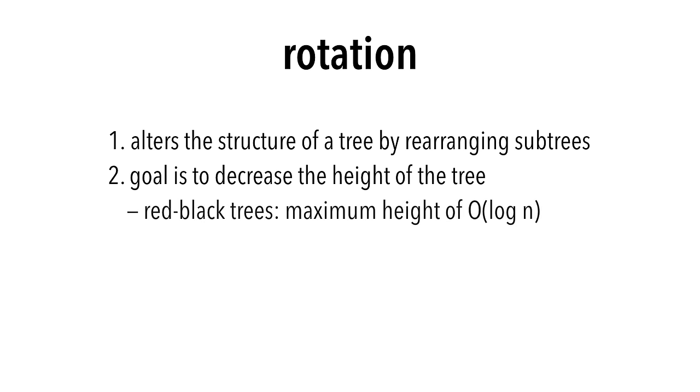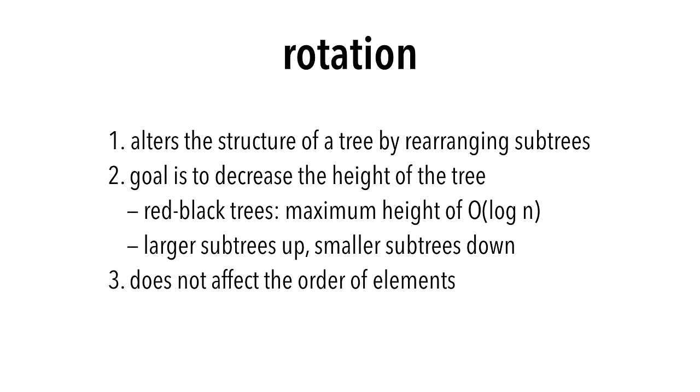Remember that we said red-black trees have a maximum height on the order of log n. We can decrease the height by moving larger subtrees up the tree and smaller subtrees down the tree. Rotations do not affect the order of elements. Smaller elements will still be to the left, and larger elements to the right.